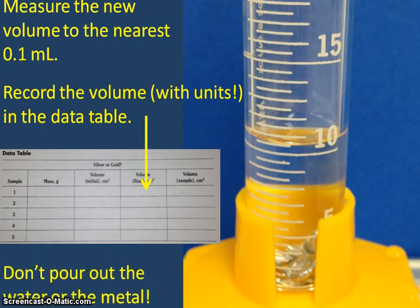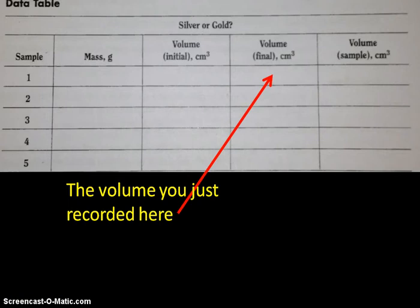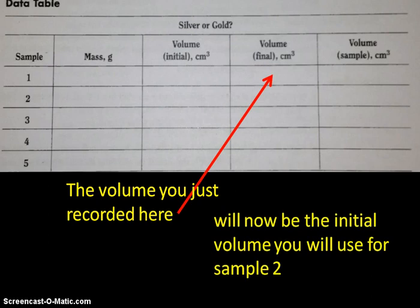Don't pour out the water or the metal at this point. You will use this new volume as the initial volume for sample number two. So the volume you just recorded in this spot will now be the initial volume you will use for sample number two.